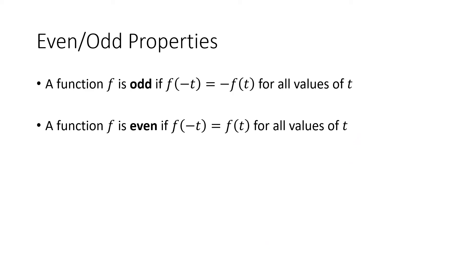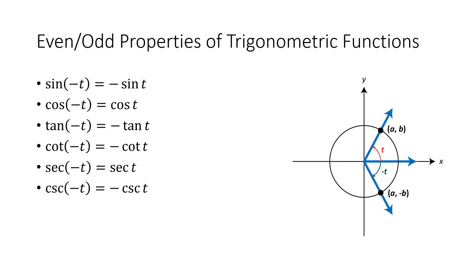Another property we study for functions is odd and even. An odd function has the property that plugging in the negative of your input gives you the negative of the output. An even function gives you the same output when you plug in the negative of your input. These are called odd and even because x to an odd power has the odd property and x to an even power has the even property. It turns out that sine, tangent, cotangent, and cosecant are odd functions, while cosine and secant are even functions.